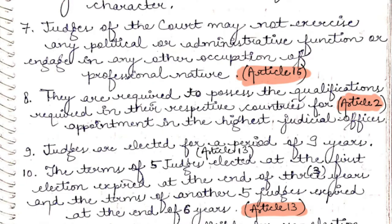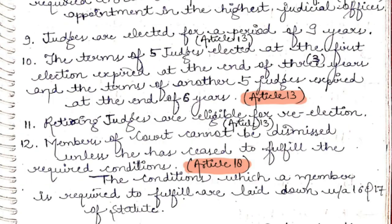Point 9: judges are elected for a period of 9 years. Point 10: the terms of 5 judges elected at the first election expired at the end of 3 years, and the terms of another 5 judges expired at the end of 6 years, per Article 13.